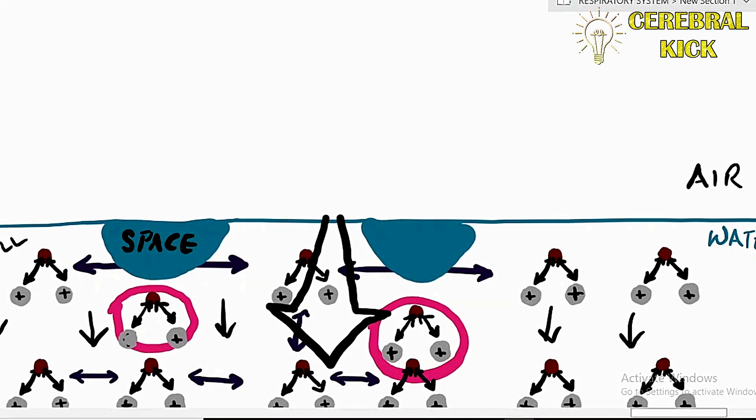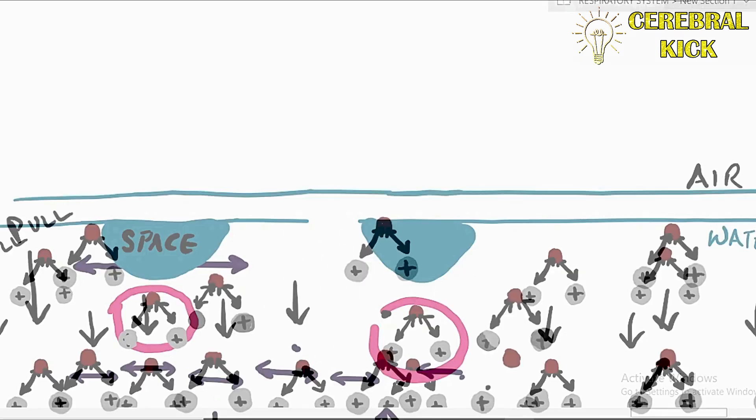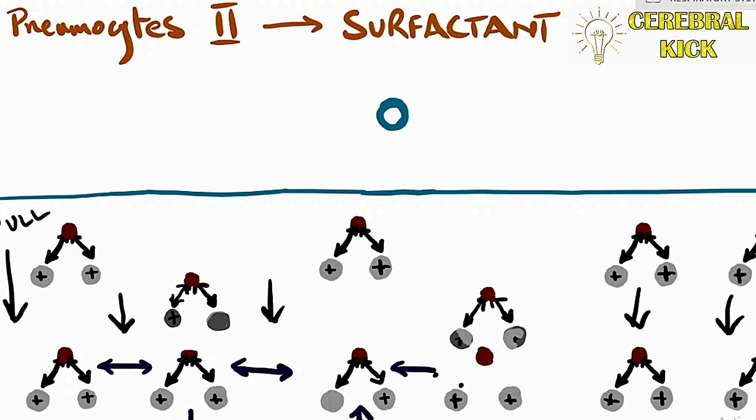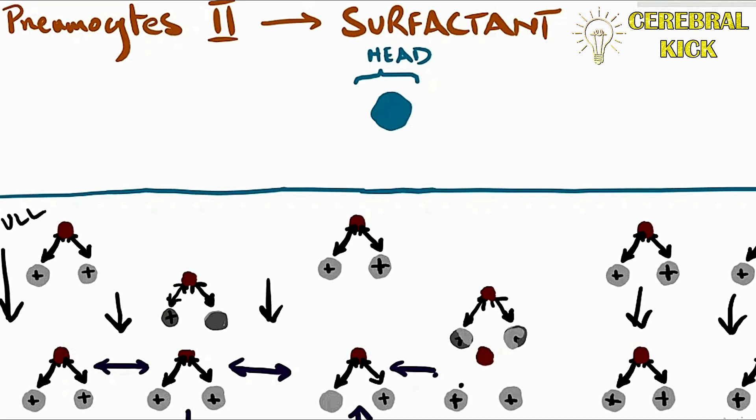This is called the surface tension on water airs interface. So how does the alveolus prevent the surface tension from collapsing it? By producing surfactant. Surfactant is a phospholipid which is produced by type two pneumocytes. We've discussed that in episode one.